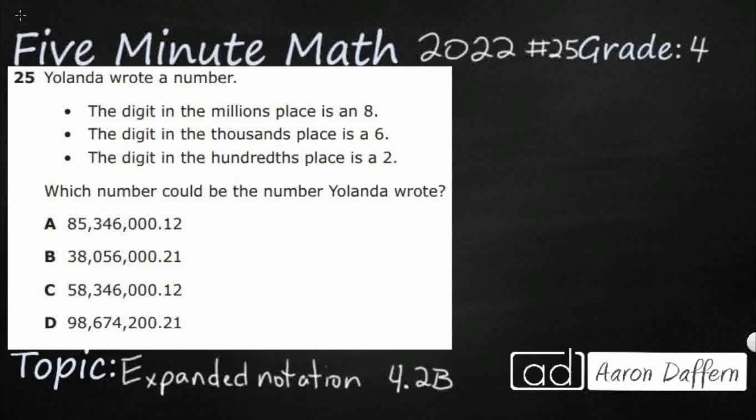So we have Yolanda, and she's writing a mystery number. We've got three clues here: an 8 in the millions, 6 in the thousands—ooh, check that out—and there's a 2 in the hundredths, so decimal, not hundreds.